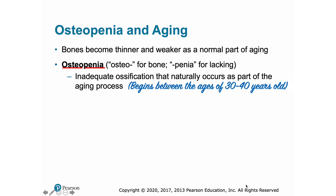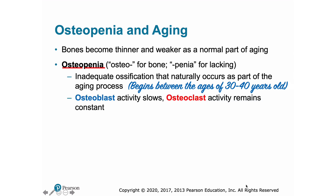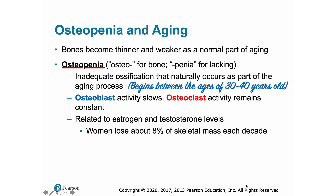Osteoblast activity — the building of new bone matrix — begins to decline, while osteoclast activity — the breakdown of bone matrix, especially in the lining of the marrow cavity — continues at previous levels. The activity of these cells is especially affected by sex hormone levels. Once reduction begins, women lose roughly eight percent of their skeletal mass every decade, while men lose less, about three percent per decade. Bone matrix loss accelerates after menopause as estrogen levels decline.